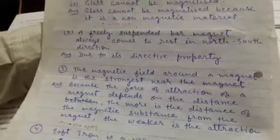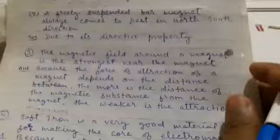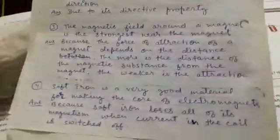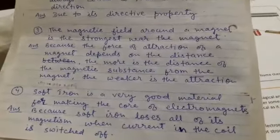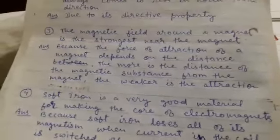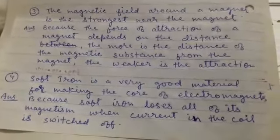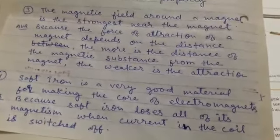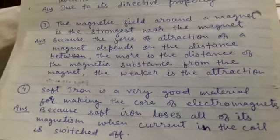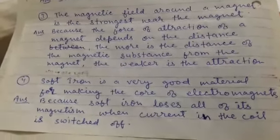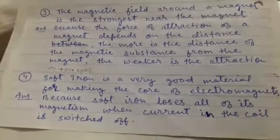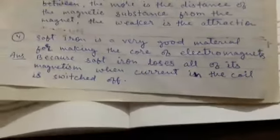Answer: Due to its directive property. Question 3: The magnetic field around the magnet is the strongest near the magnet — why? Answer: Because the force of attraction of a magnet depends on the distance. The more the distance of the magnetic substance from the magnet, the weaker is the attraction.